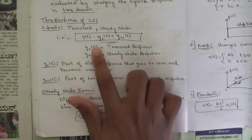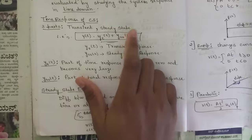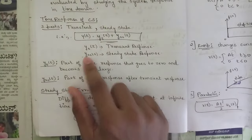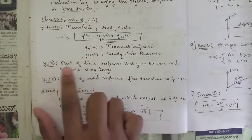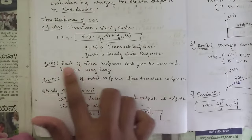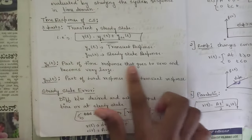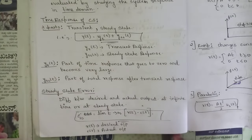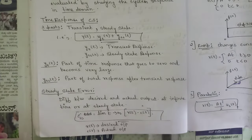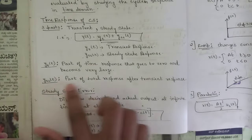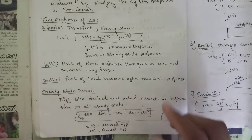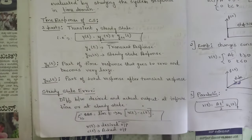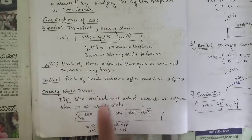One parameter is called transient state and another is called steady state. Transient state is represented as y_t(t) and steady state as y_ss(t). y_t(t) is the part of the time response that goes to zero as time becomes very large — that is the transient state. The part of the total response after the transient response is called the steady state.